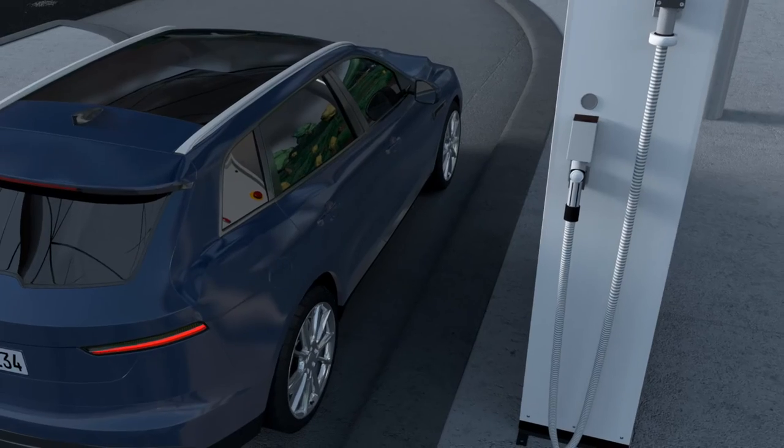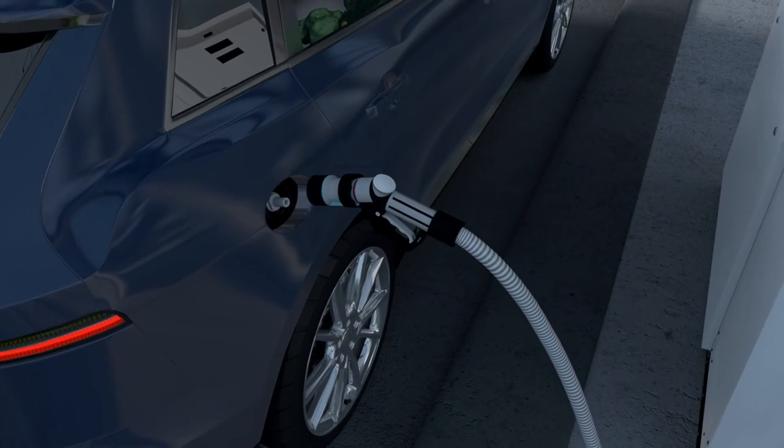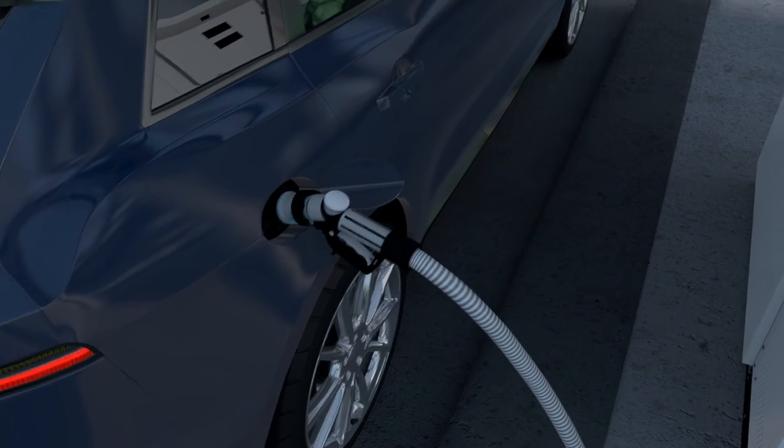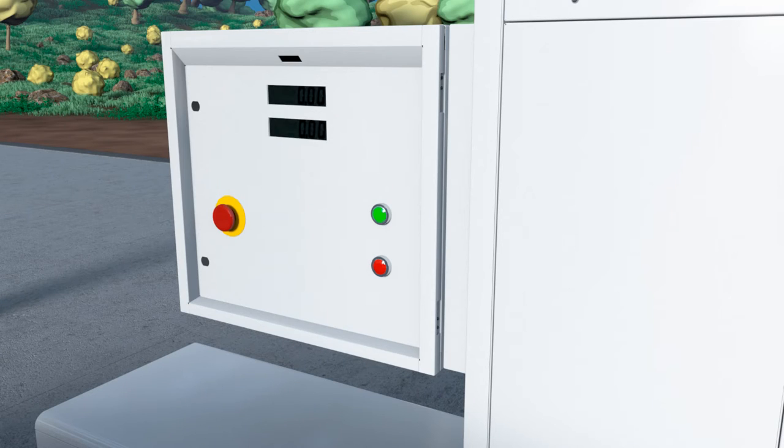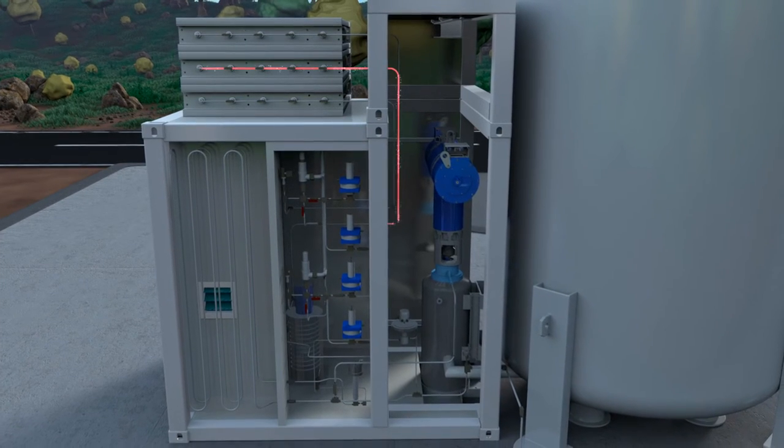The customer attaches the fuel nozzle to the vehicle's fueling inlet and pushes the start button on the hydrogen dispenser. After docking the fuel nozzle and beginning the fueling process, the system initiates an automatic leak test. After that, the hydrogen starts flowing towards the vehicle from both the pump and the storage tanks.